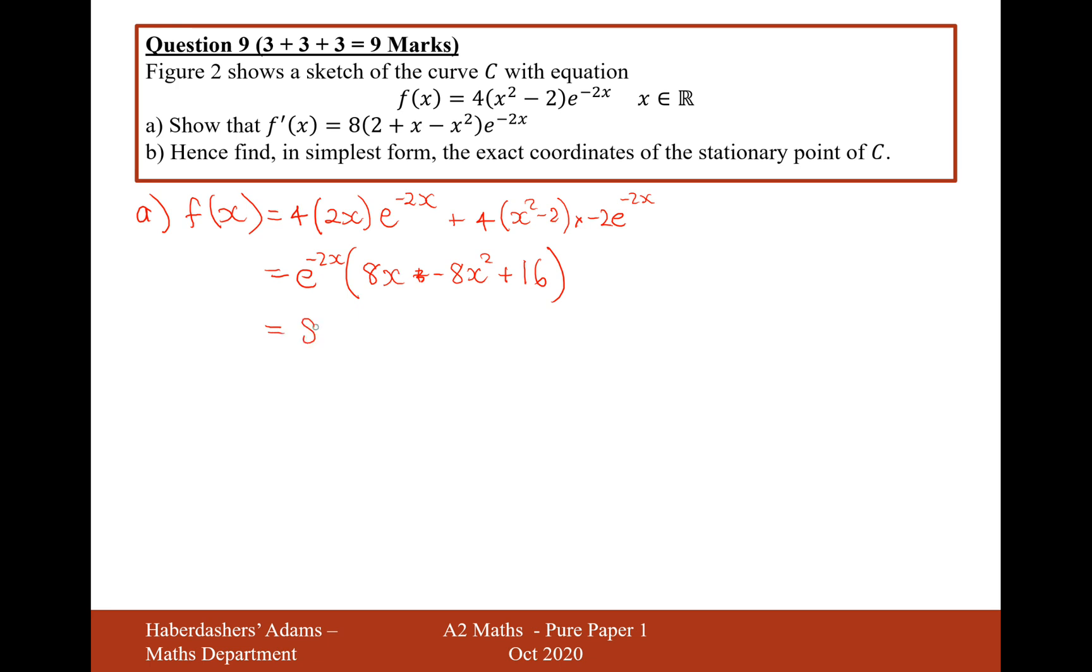And so let's now factorize out the 8. So it's 8e to the minus 2x. And then it's going to be minus x squared. So we'll start with the 16. 2 plus x minus x squared. Yeah, that's what we got here. Lovely, good stuff. So that's the answer to part A.